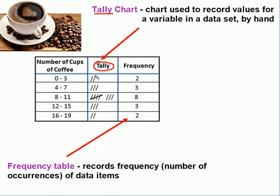Then, once we've recorded all these by hand, then what we can do is we can create a frequency table. And a frequency table is the number of occurrences of a data item. So frequency, not frequency as in radio frequency, but frequency as in the number of occurrences of a data item.